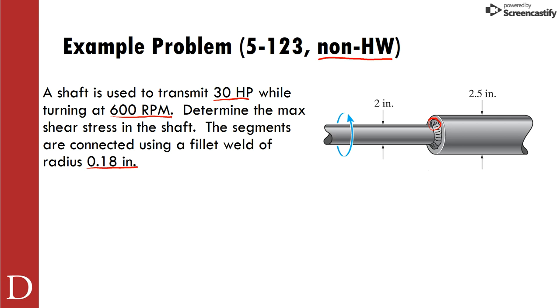So what is the key information here? Why do we need speed and power and this radius? We need to find what this torque is. Why do we need that? We need to put that into tau equals Tc over j, and when we look at the stress concentration, we're going to have to multiply that by k, and that will get us tau max.